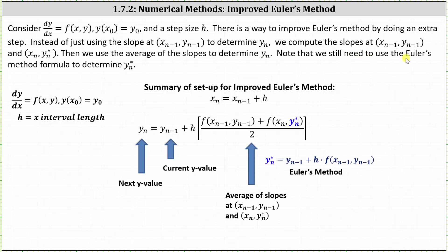Note that we need to use the original Euler's formula to determine y sub n, the y coordinate of the second point, which I've indicated using y sub n star. I'm using y sub n star here to not confuse this with y sub n using the improved Euler's method formula.